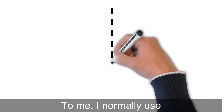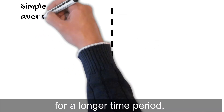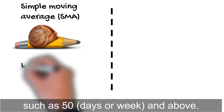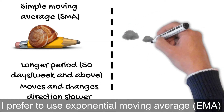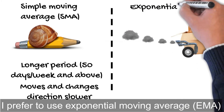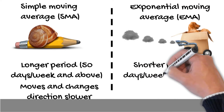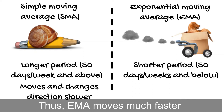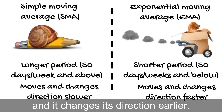I normally use simple moving average, SMA, for a longer time period, such as 15 days and above. For shorter time periods, I prefer to use exponential moving average, EMA. EMA has a quicker reaction to the most recent price changes — it moves much faster and changes its direction earlier.